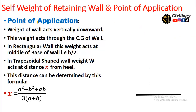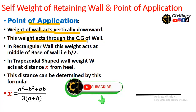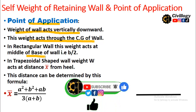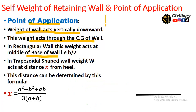First, we will find the point of application of weight W. The weight of a wall acts vertically downward through the center of gravity of the wall. In a rectangular wall, this weight acts at the middle of the base, that is B divided by 2. As you can see in this picture, the weight W acts at the center of the base of the rectangular wall.